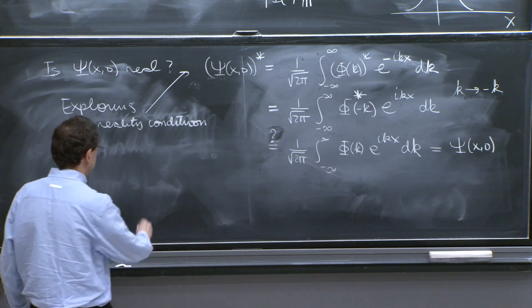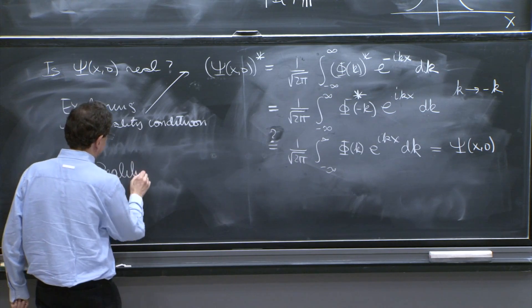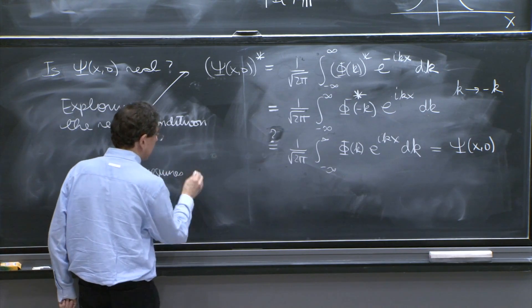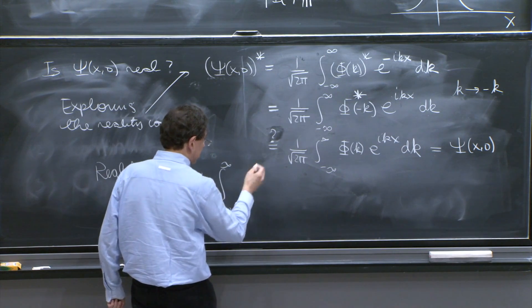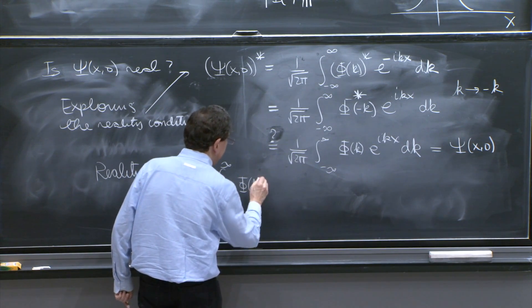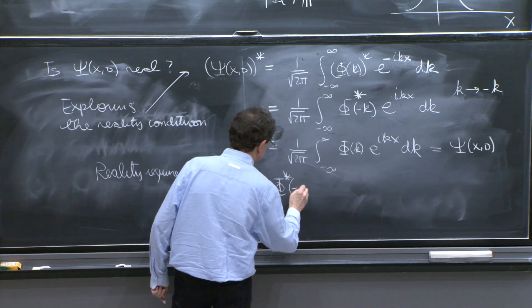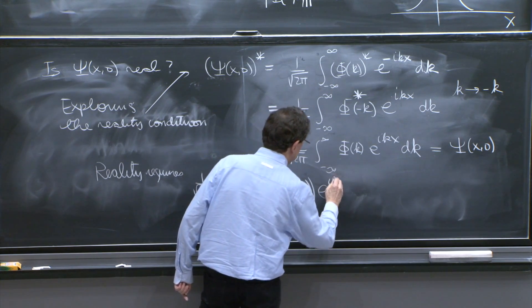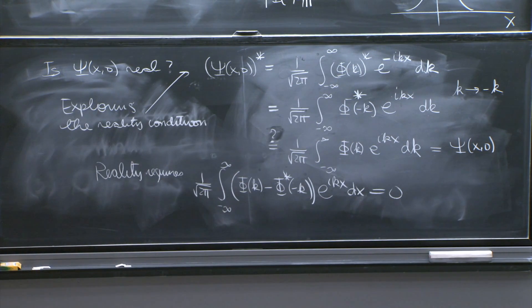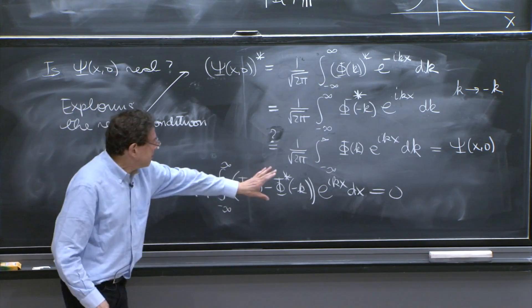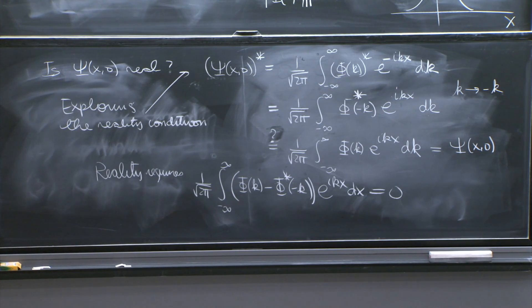So what must be true is that these two terms must equal each other. So in fact, this requires, reality requires, that 1 over square root of 2 pi integral from minus infinity to infinity, phi of k minus phi star of minus k e to the ikx dk is equal to 0. I brought the two terms to one side. Both are of the same type, they're integrated against an e to the ikx, and therefore we can combine them. And that's what must be true in order for the function to be real.